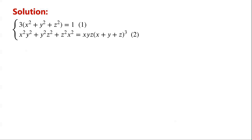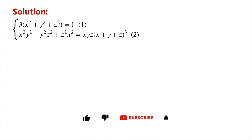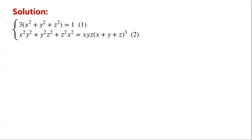However, clearly x equals y equals z equals zero satisfies the second equation, but does not satisfy the first equation. So x, y, and z cannot be all equal to zero.